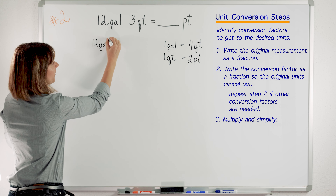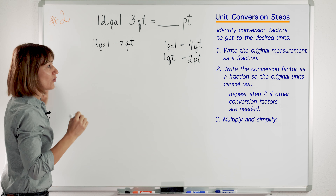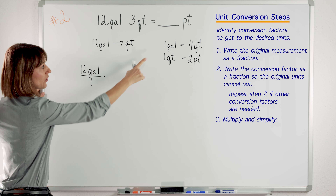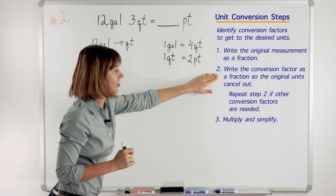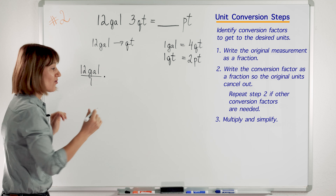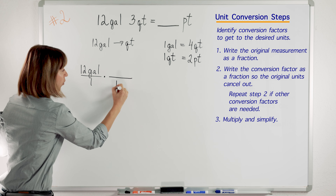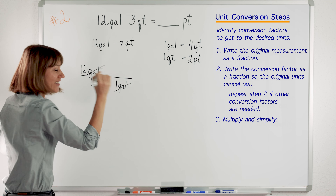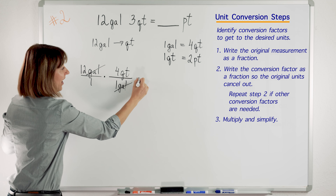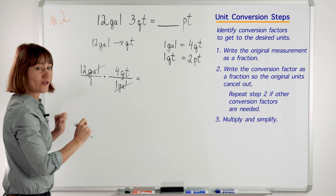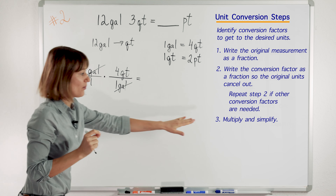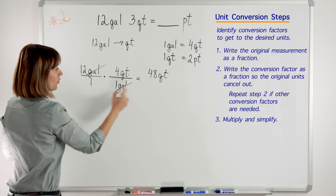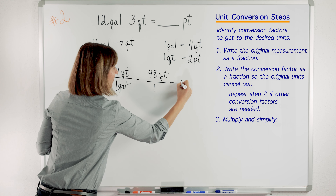We are going to take 12 gallons and change it to quarts. Write the original measurement as a fraction: 12 gallons over 1, times the conversion factor — write it as a fraction to cancel our original units. I have gallons on top, so I will put 1 gallon on the bottom to cancel my original units. And then we will put 4 quarts on top in the numerator — gallons are gone, we are left with quarts. Now we do the math: 12 times 4 is 48. So we have 48 quarts over 1, which is 48 quarts. So 12 gallons equals 48 quarts.